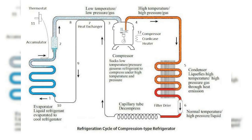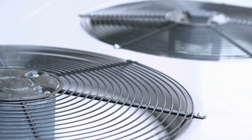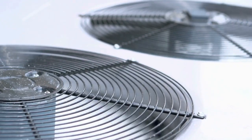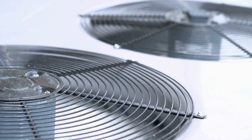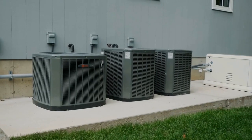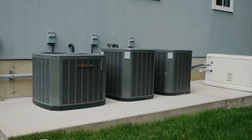Cooling process. The refrigerant, now in its gaseous form, moves through the evaporator coils, absorbing heat from the surrounding air. The refrigerant then returns to the compressor, where the cycle starts all over again. This process continues until the desired temperature is reached and maintained.